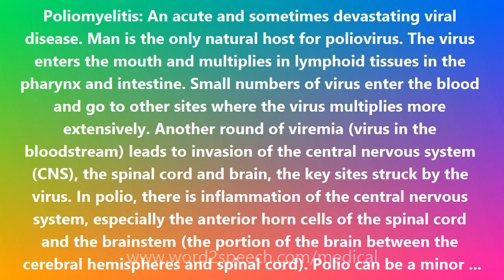In polio, there is inflammation of the central nervous system, especially the anterior horn cells of the spinal cord and the brainstem, the portion of the brain between the cerebral hemispheres and spinal cord.